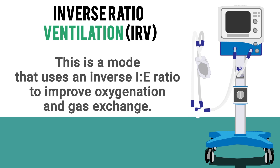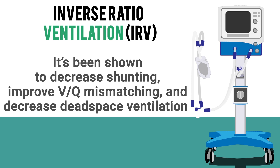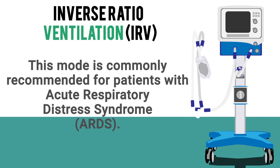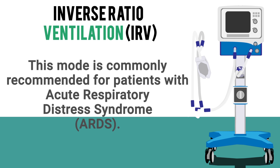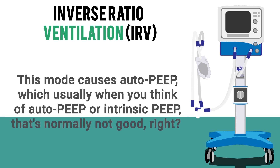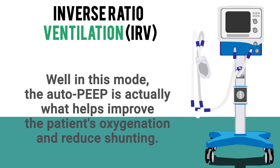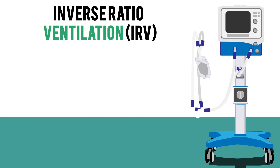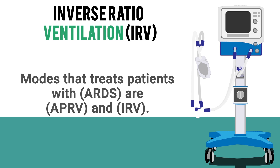IRV, or Inverse Ratio Ventilation, is a mode that uses an inverse I:E ratio to improve oxygenation and gas exchange. It has been shown to decrease shunting, improve V/Q mismatching, and decrease dead space ventilation. This mode is commonly recommended for patients with ARDS. Notably, this mode causes auto-PEEP, which in this context actually helps improve the patient's oxygenation and reduces shunting. Remember: both APRV and IRV are used to treat patients with ARDS.